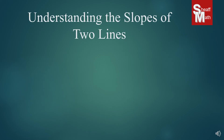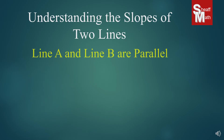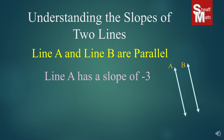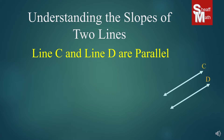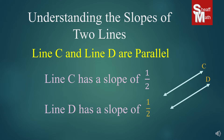Right now, we're going to look at a parallel line example. We have line A and line B that are parallel — they're going in the same direction. If line A has a slope of negative 3, then line B has a slope of negative 3, because parallel lines have the same slope. In another example, line C and line D are parallel. Line C has a slope of 1/2, and so line D also has a slope of 1/2. Parallel lines are always going to be the same slope, no matter what.